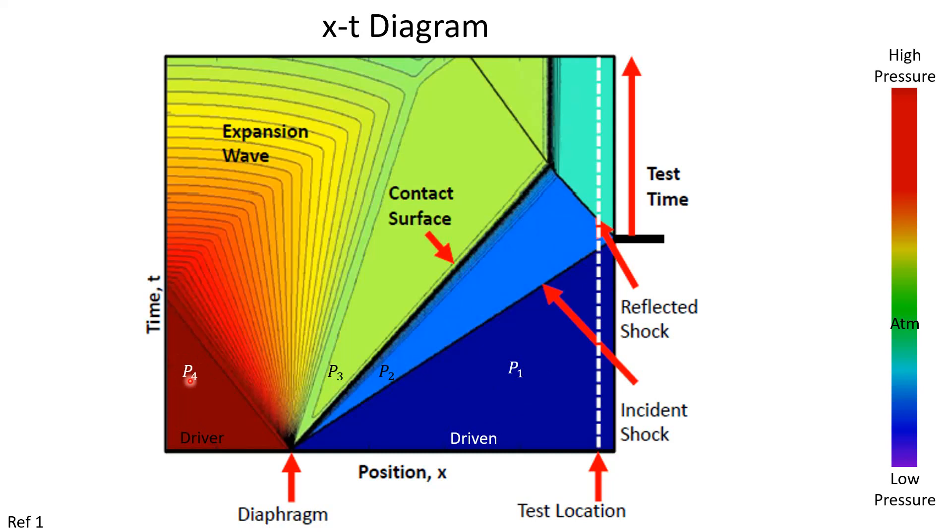We've got a few additional pieces of nomenclature here. Notice that we have a contact surface called out and the definition of the contact surface is just the moving boundary between the shock processed fluid here at P2 and the expanding fluid here at P3 and this expansion wave. And then the test time is essentially defined as the time at which the test location remains at state 5.